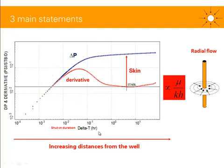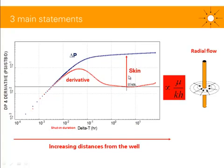As delta T increases, you're looking further away in the reservoir, and you will expect radial flow regime with a stabilization — circular flow towards the well. At large delta T, you're looking even further away from the well, and what you might expect is boundaries. A boundary will be represented by an increase in your derivative at late time. Quick recap: a stabilization on your derivative could be indicative of radial flow regime in the horizontal plane; the level of stabilization is inversely proportional to KH; the vertical separation between the two plots is indicative of skin; and delta T could be replaced by the radius from the well.